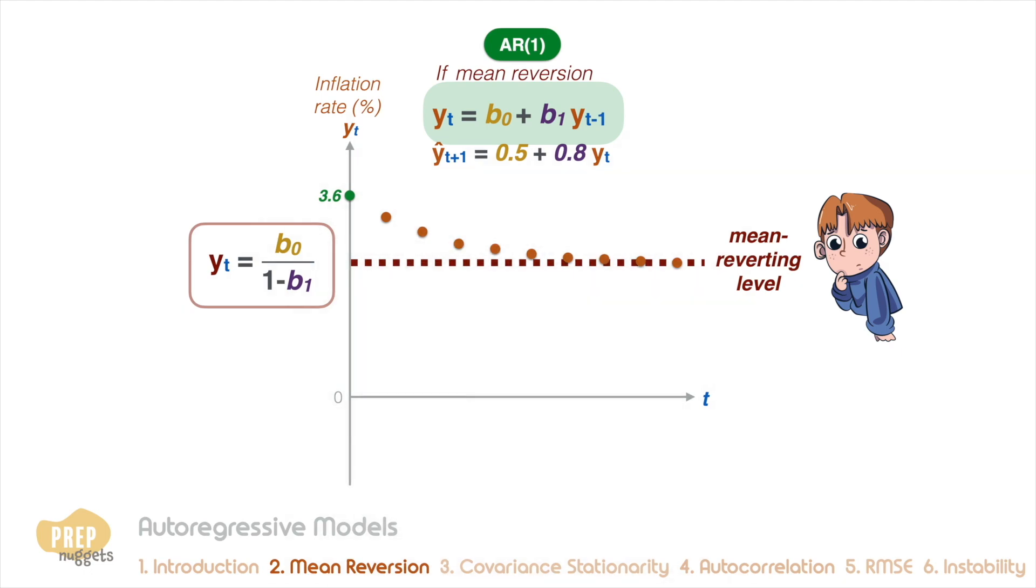And we're back. This should not trouble you much. Simply plug in the coefficients b0 and b1 and we get a mean reverting level of 2.5%.